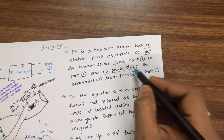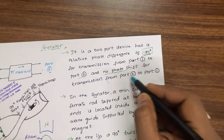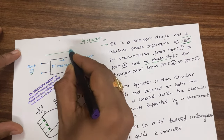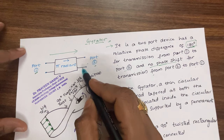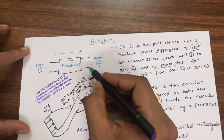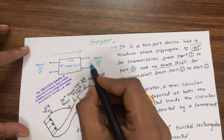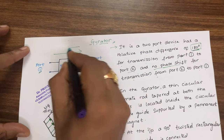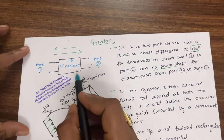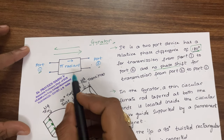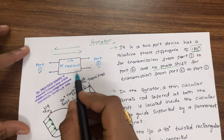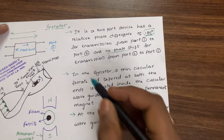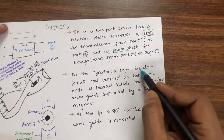There is no phase shift for transmission from port 2 to port 1. That means when moving from port 1 to port 2, this two-port device — the gyrator — offers 180 degrees phase shift, and when moving from port 2 to port 1 it has zero phase shift. That is very important.